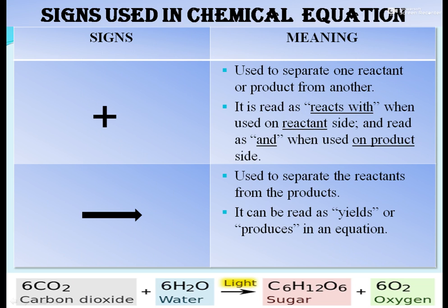There are certain signs used in a chemical equation. The plus sign is used to separate one reactant or product from another. When used on the reactant side, we read it as 'reacts with' — like in photosynthesis, carbon dioxide reacts with water. When used on the product side, we read it as 'and' — like sugar and oxygen are produced. The arrow separates reactants from products and can be read as 'yields' or 'produces'.